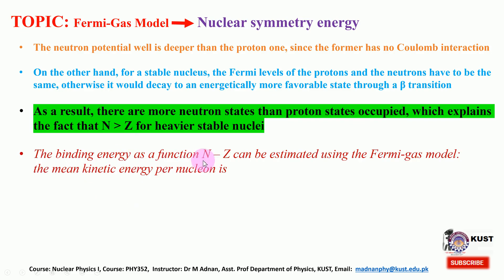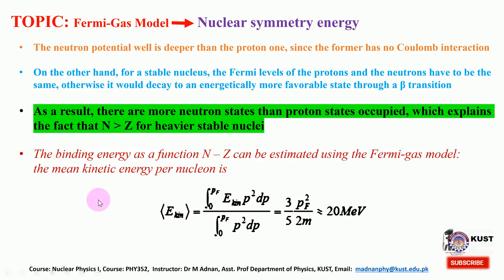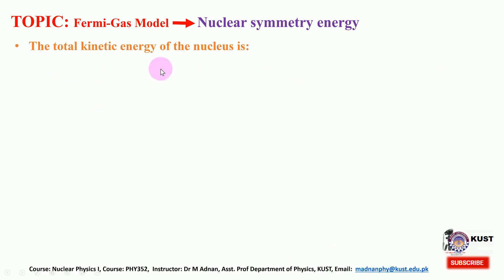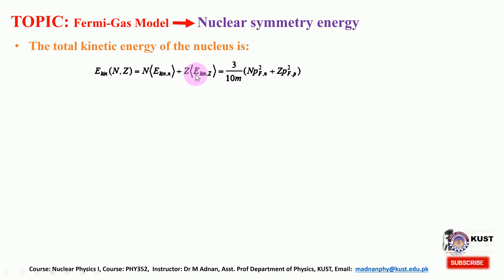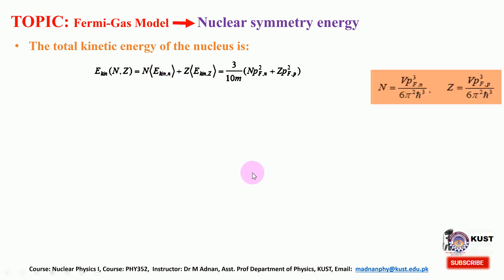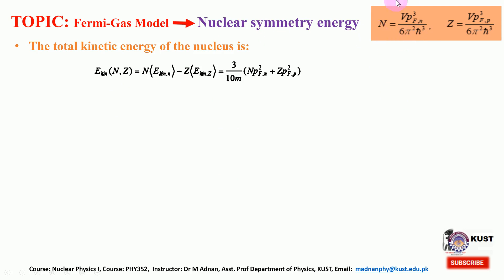The binding energy as a function of N and Z — the neutron and proton number — can be estimated using the Fermi gas model. The mean kinetic energy for the nucleon can be worked out using the Fermi momentum, where the average definition is used to calculate the average energy written in terms of momentum. The total kinetic energy of the nucleus is the sum of the two shells, as there are two wells with two energy level diagrams.